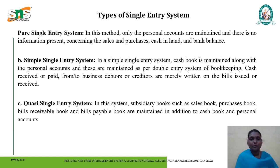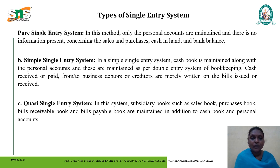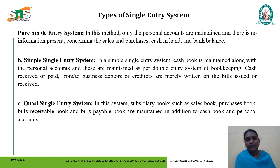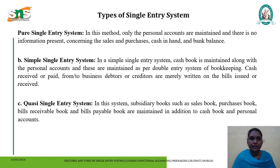In the quasi single entry system, subsidiary books such as the sales book, cash book, bills receivable book, and bills payable book are maintained in addition to the cash book and personal accounts. So it is known as the quasi single entry system. These are all the various types of single entry system, normally used rarely in the case of Indian entities. Thank you.